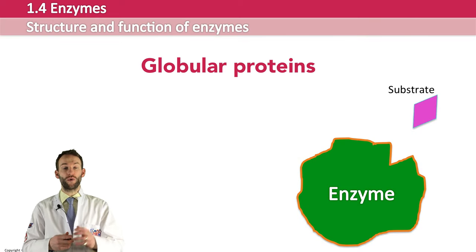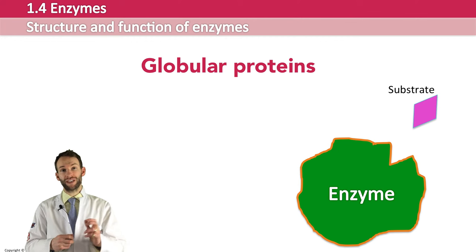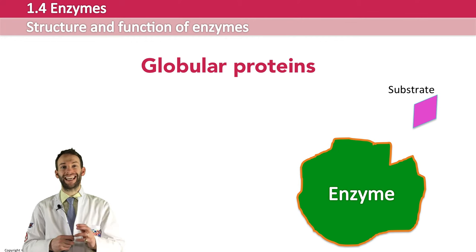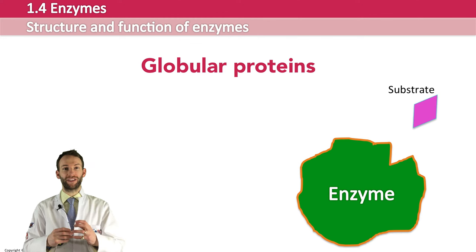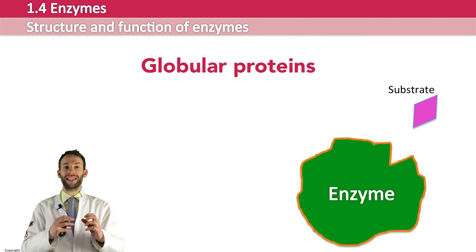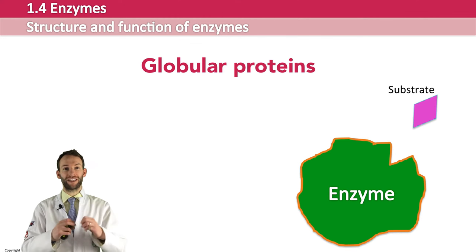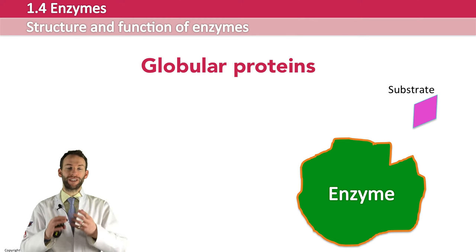Here are some basics on enzymes. Enzymes are globular proteins, and you should know all about protein structure from earlier in the course. Most names of enzymes end in '-ase.' They have a very specific shape because of the bonding, as explained in the protein structure topic. Because of the primary structure of the protein — the chain of amino acids — the protein will fold up and form a very specific shape.